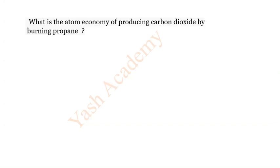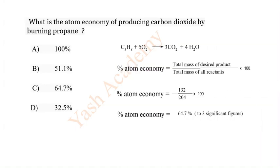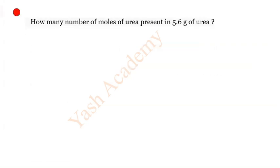What is the atom economy of producing carbon dioxide by burning propane? Options: A 100%, B 51.1%, C 64.7%, D 32.5%. So correct answer is C: 64.7%. This is the last question of this video.